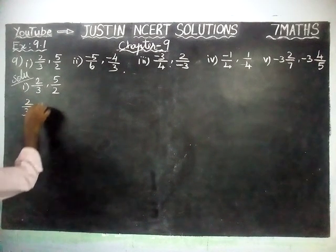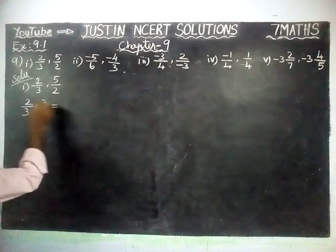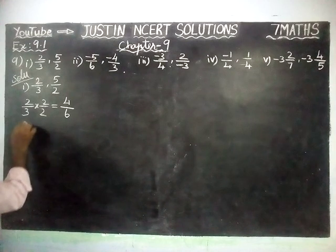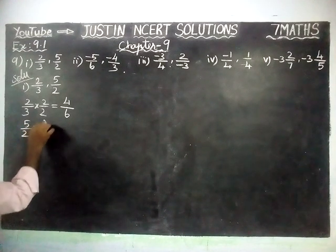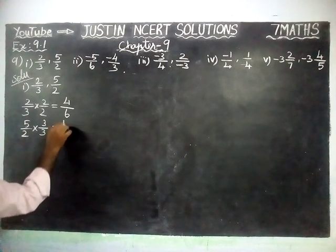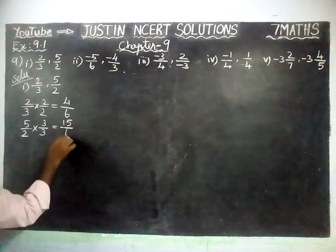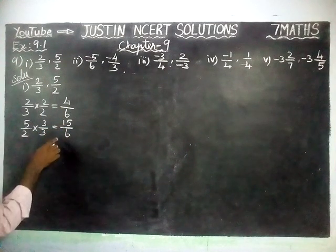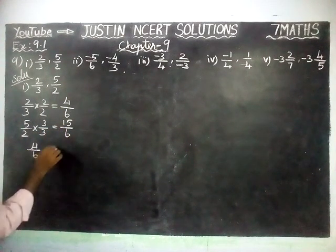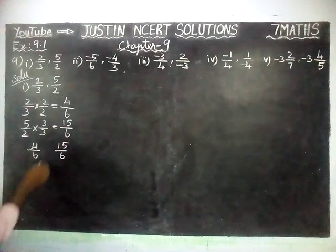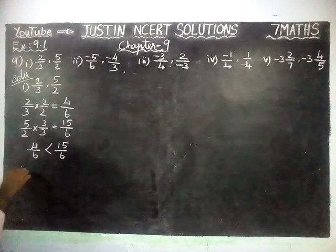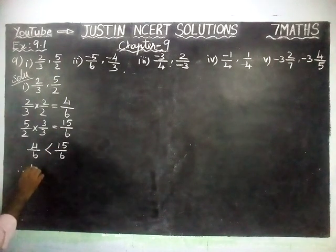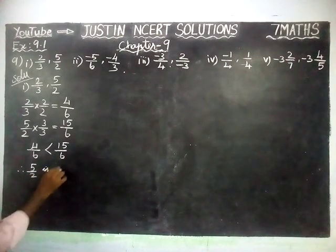2/3 multiplied by 2/2 is equal to 4/6. Next number: 5/2 multiplied by 3/3 is equal to 15/6. Now we have the common denominator: 4/6 and 15/6. Since 15/6 is greater, therefore 5/2 is greater.